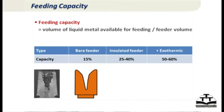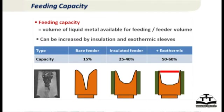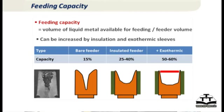You can increase the capacity of the feeder by insulating it — this can go up to 25 to 40 percent with insulation. You can also sprinkle exothermic powder or put an exothermic cover on top of the feeder, which generates heat and keeps the feeder hot for longer duration. This way, feeding capacity can be as much as 50 to 60 percent or even more.